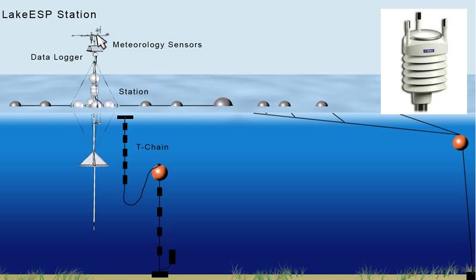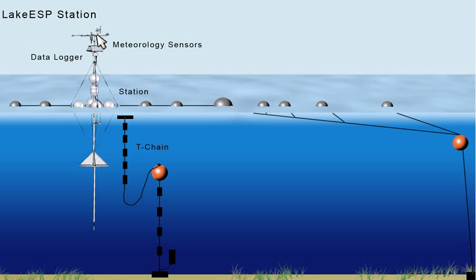The Vaisala WXT520 is a highly integrated electronic sensor that measures wind speed, direction, air humidity, air temperature, liquid precipitation, and barometric pressure. This sensor has a serial data output and can be directly connected to Lake ESP.